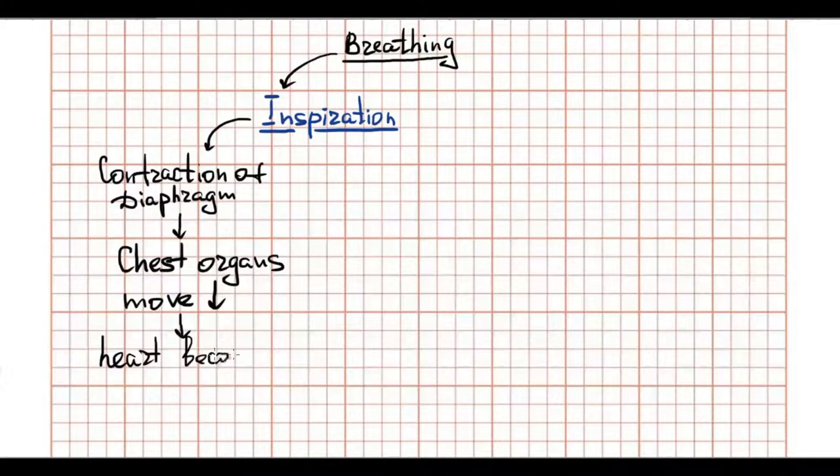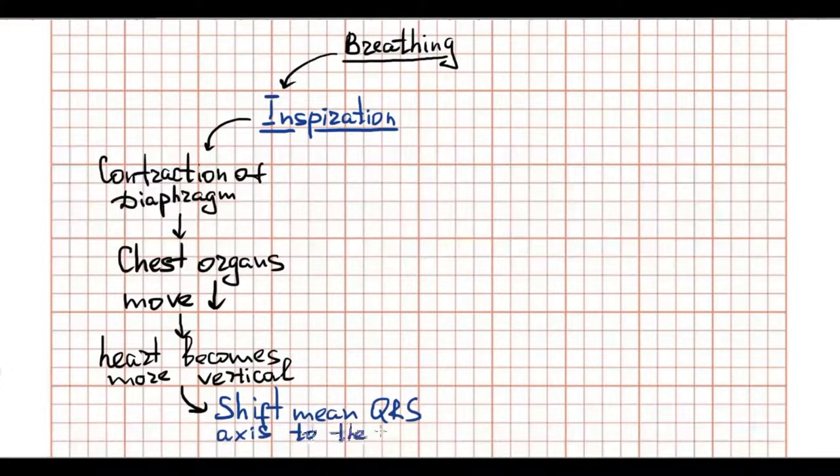When the person breathes in, the diaphragm descends and the heart becomes more vertical in the chest cavity. This change generally shifts the QRS electrical axis vertically.